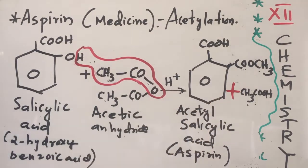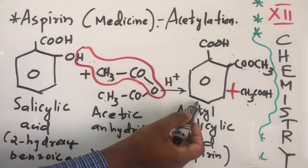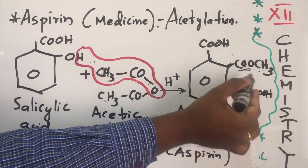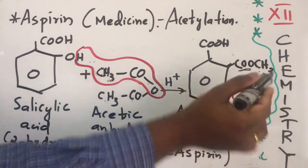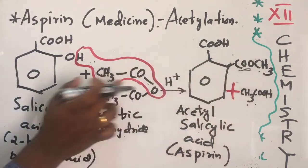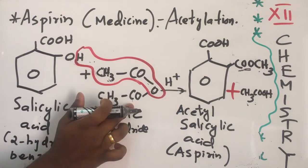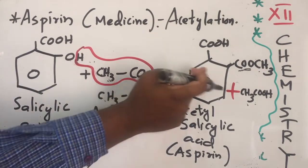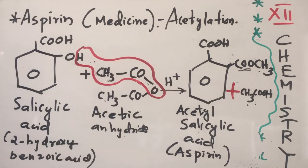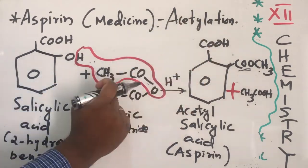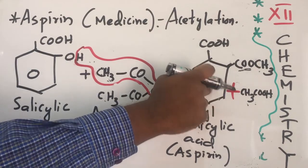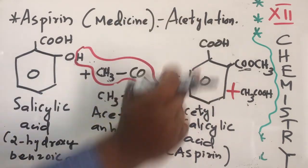How is this connected with esterification? Because the product is an ester — it contains the COO group. Organic compounds containing COO are called esters, so aspirin is also an ester and its formation is an esterification reaction. This process is also called acetylation, because during the process an acetyl group (COCH3) is introduced into the product.